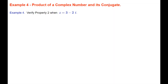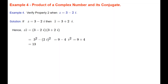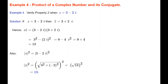In example 4, we verify property 2 when z equals 3 minus 2i. The conjugate of z is 3 plus 2i, so z times z-bar is 3 minus 2i times 3 plus 2i. Expanding using the difference of two squares gives 3 squared minus 2i all squared, which is 9 minus 4i squared, equal to 9 plus 4, which is 13. The modulus of z squared is the square root of 3 squared plus minus 2 squared, all squared, giving the square root of 13 squared, which is also 13. The property is verified.